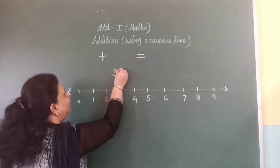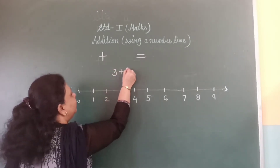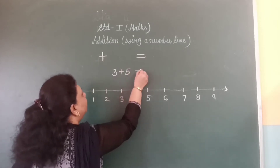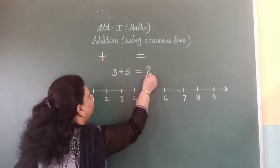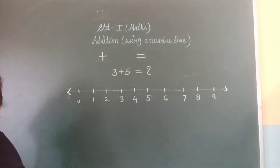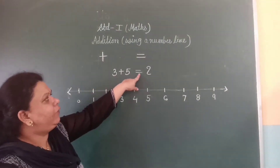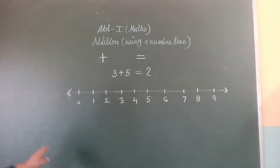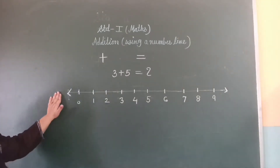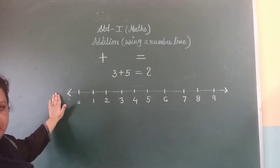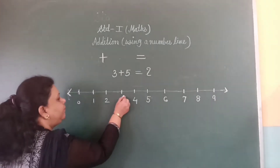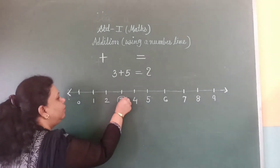Addition on a number line is making forward jumps from the left side to the right side. Let us start the first example. 3 plus 5 is equal to how many? Look at the number line. First, locate 3 on the number line. This is number 3.